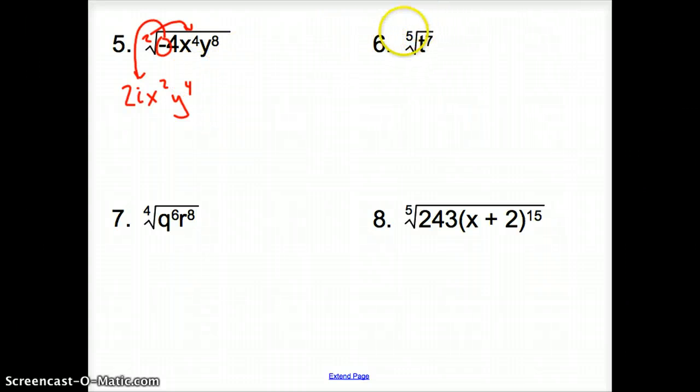Now, 6 changes it up for us. Here we have an index of 5. How many times does that 5 go into 7? It goes into 7 one time, correct? So I'm going to put down t to the 1st. If you don't want to put down the 1st, that is fine.